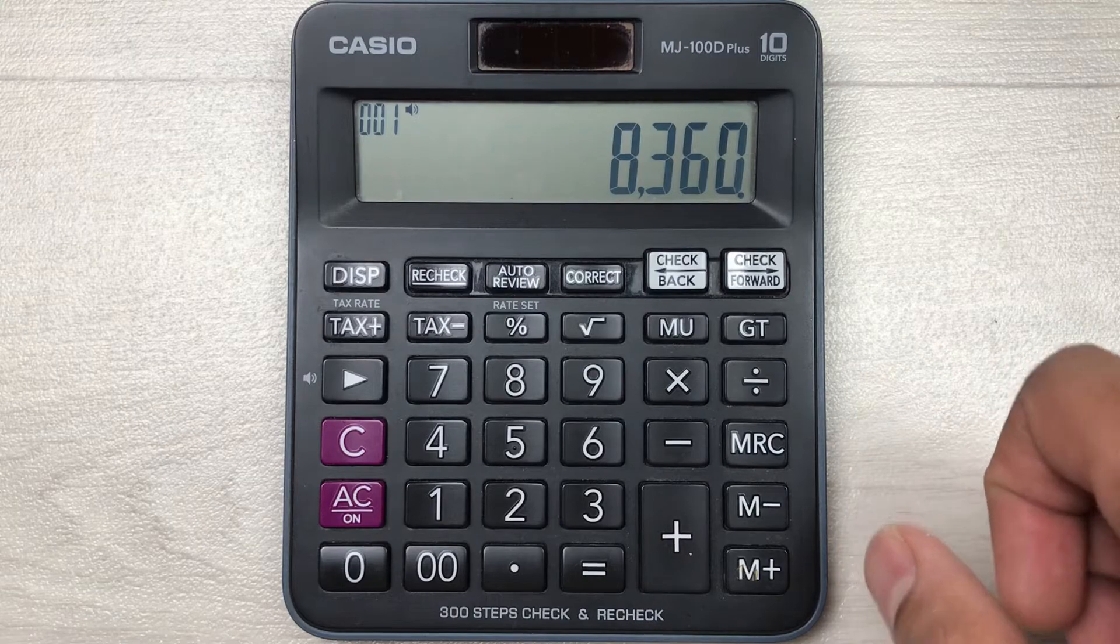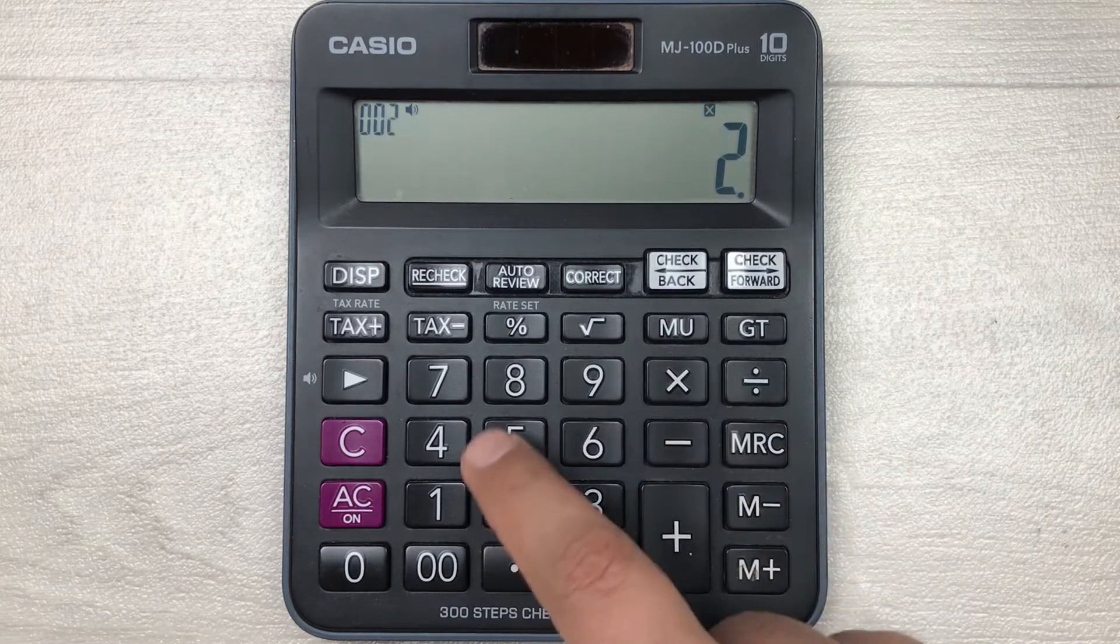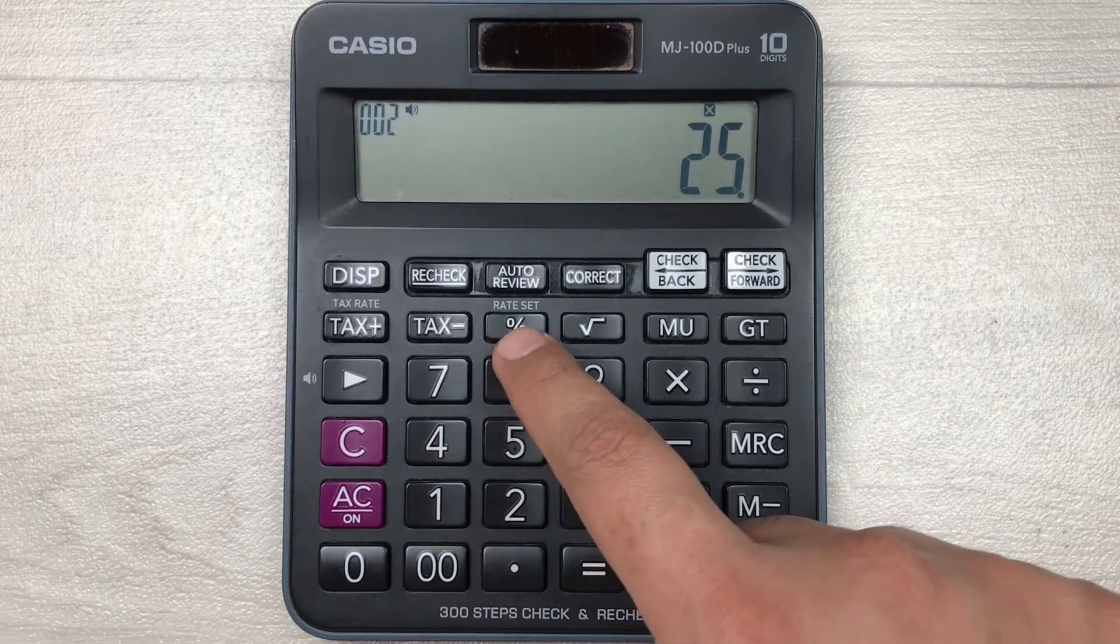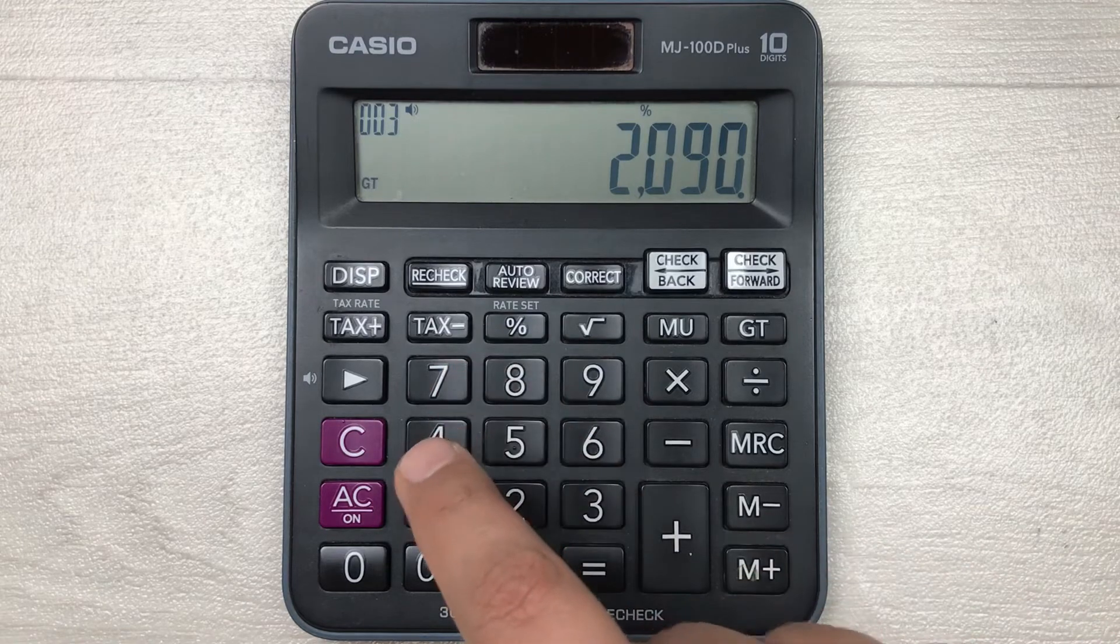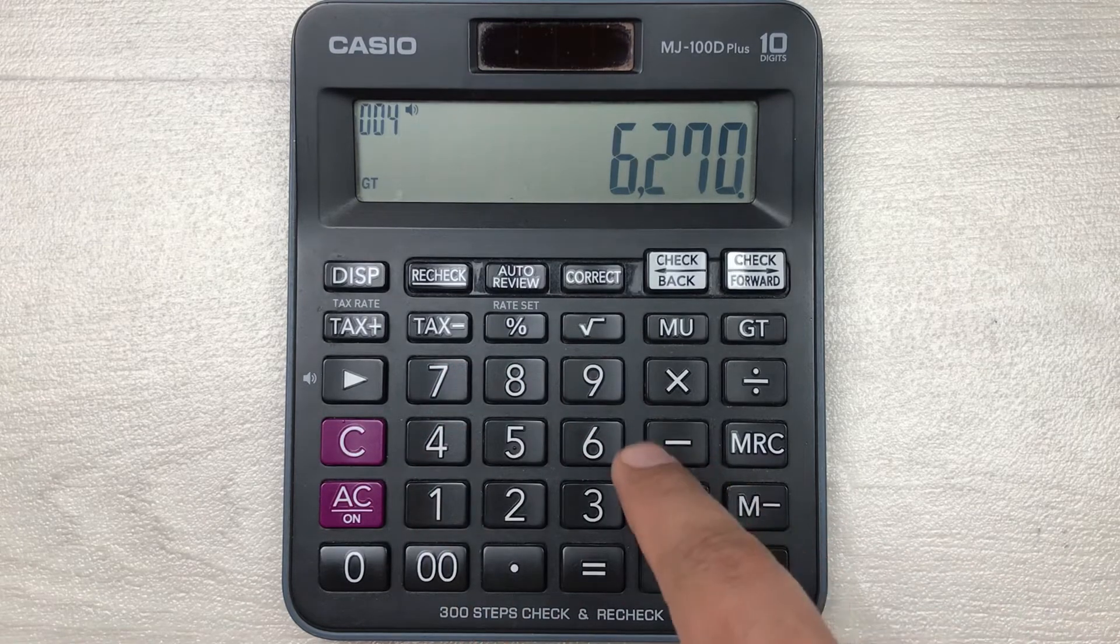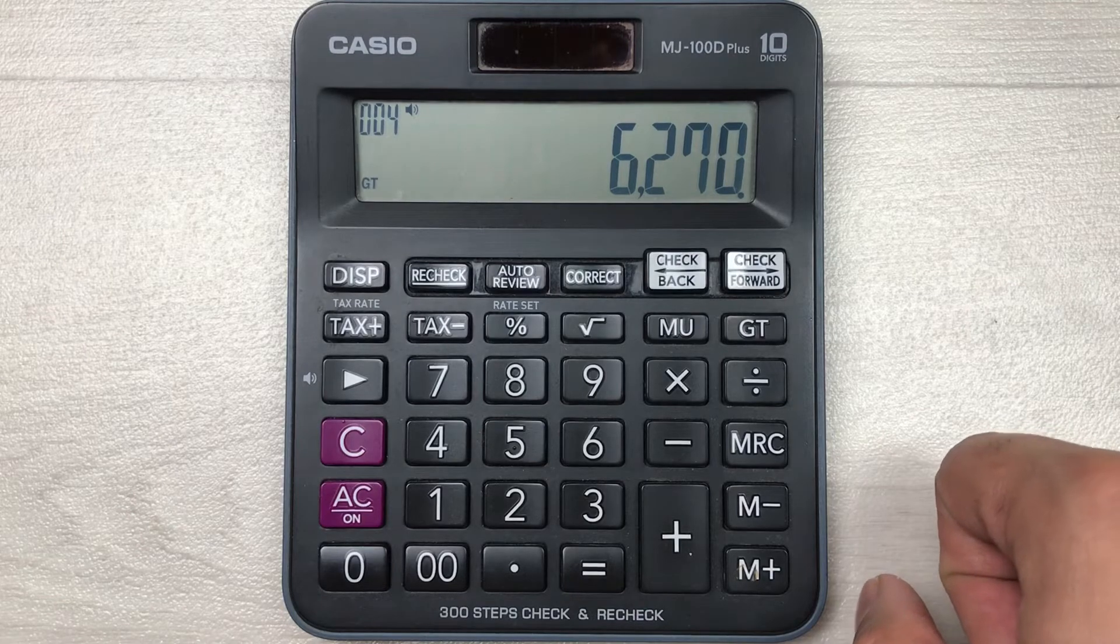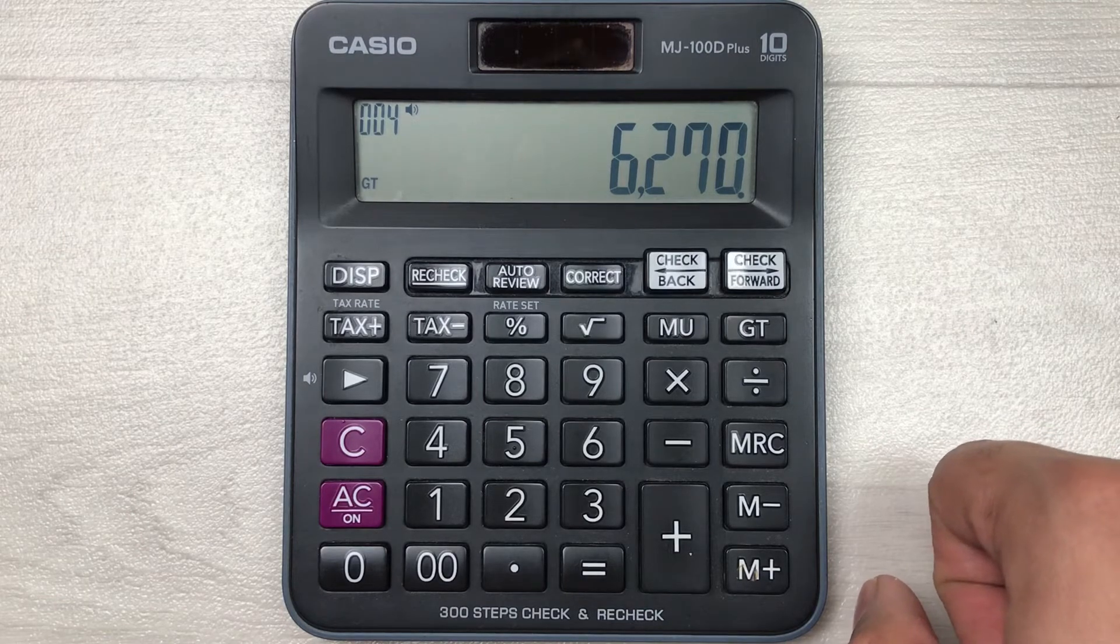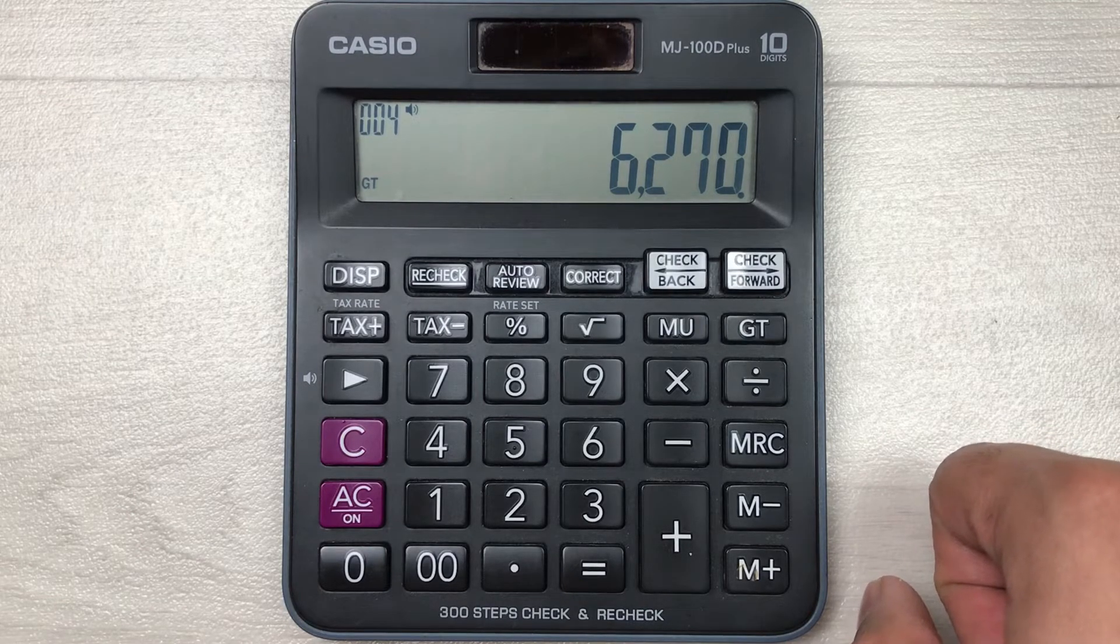Simply, you have to multiply it with 25, then you press this percentage button, and in the last you have to press this minus button. So here is your final answer. 62.70 is the final price after 25 percent off.